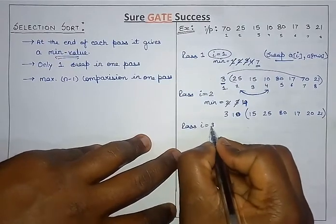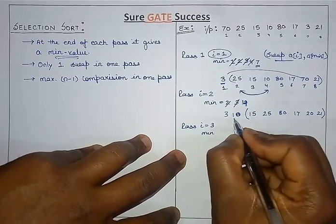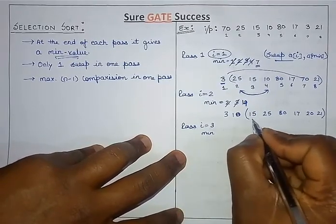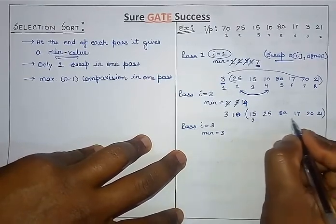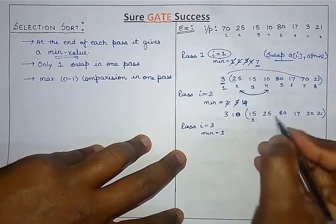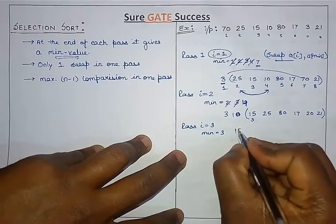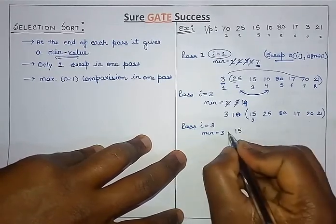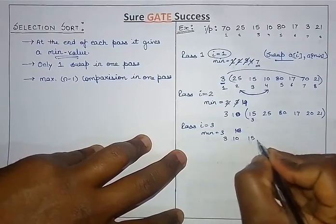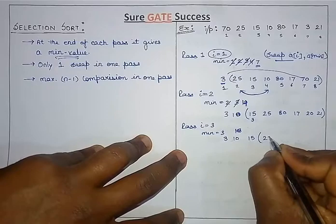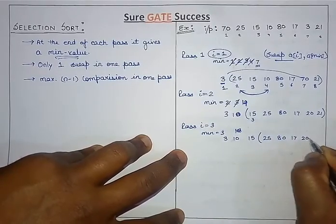For the third pass, i value will be 3. The first two elements are already sorted so we don't disturb them. We start from the third position onwards. Checking further, there will be no change because 15 is the smallest. The array remains: 3, 10, 15, 25, 80, 17, 20, 21.